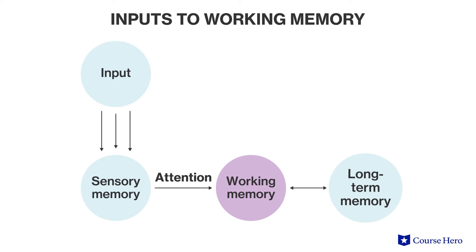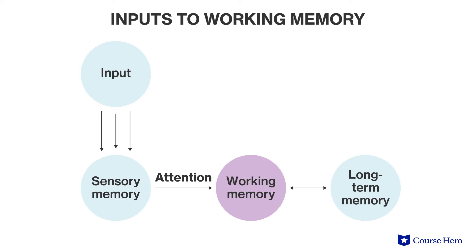Think about using long-term memory to cook a favorite recipe. You're going to draw on sensory memory for auditory and visual information, like knowing when your water is boiling and prepping the food in front of you. But your working memory will also draw on long-term memories to access stored facts and procedures, like how you've prepared this meal in the past and what changes you normally make to the recipe.